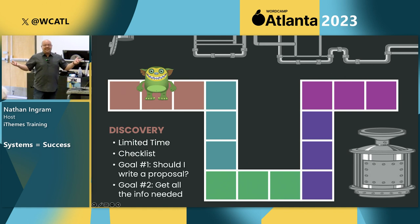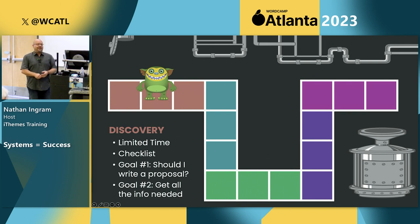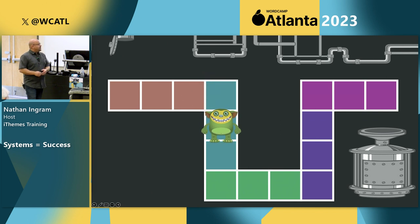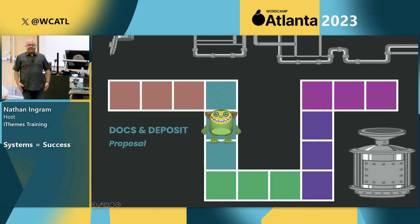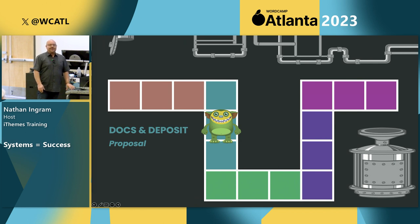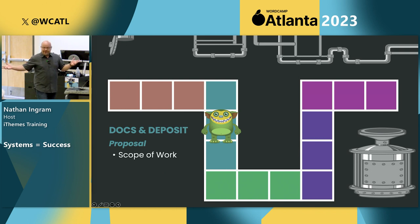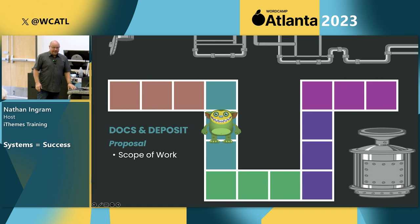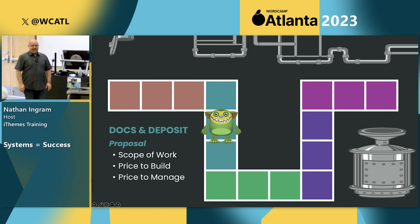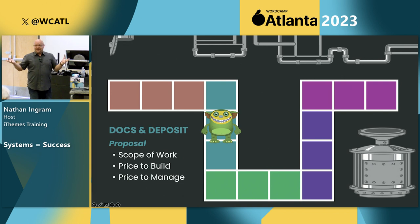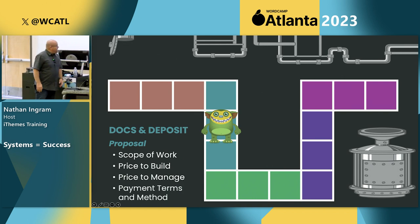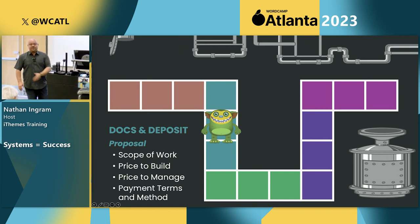Two goals for the discovery meeting: number one, should I even write a proposal for this client? Number two, I need all the information to create that proposal. Once we pass that, we move into documents and deposits. We give them a proposal containing a scope of work, the price to build the site, the price to manage the site, payment terms, payment method, and sign on the dotted line. I take a very skinny approach to proposals — marketing language goes on your website, not in your proposal.